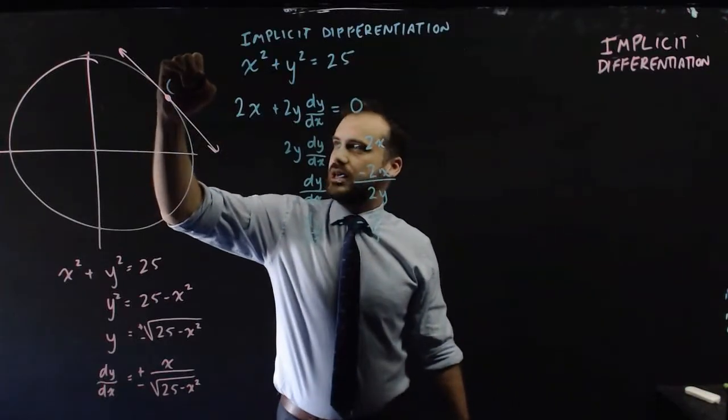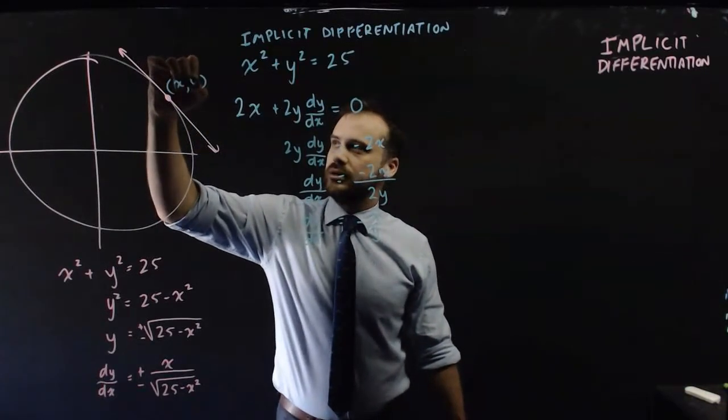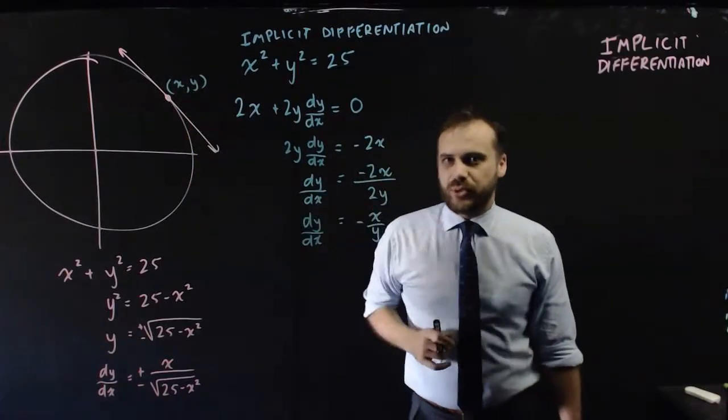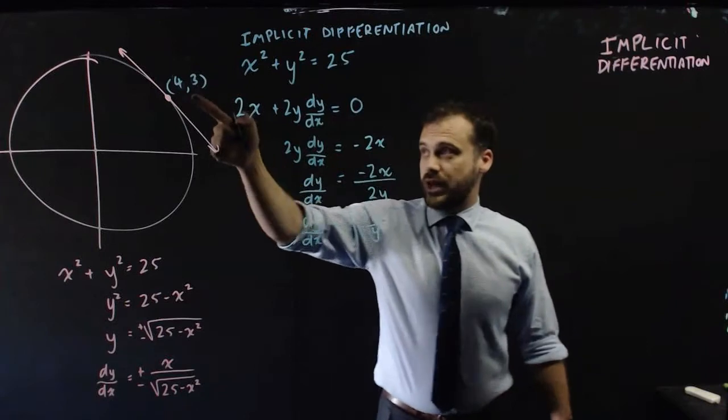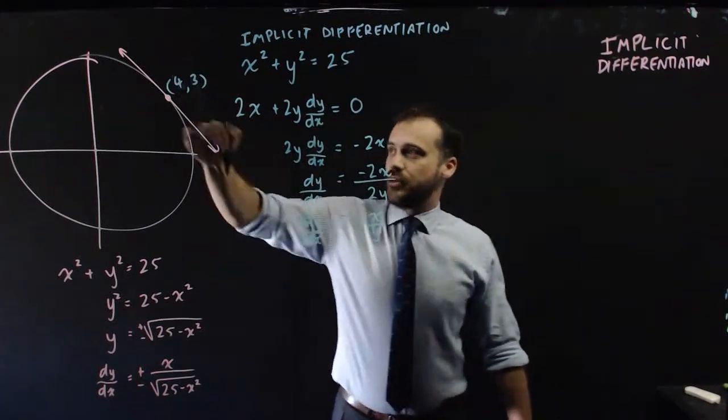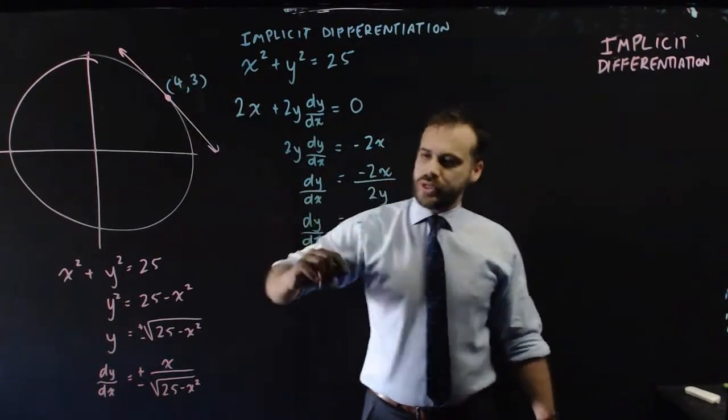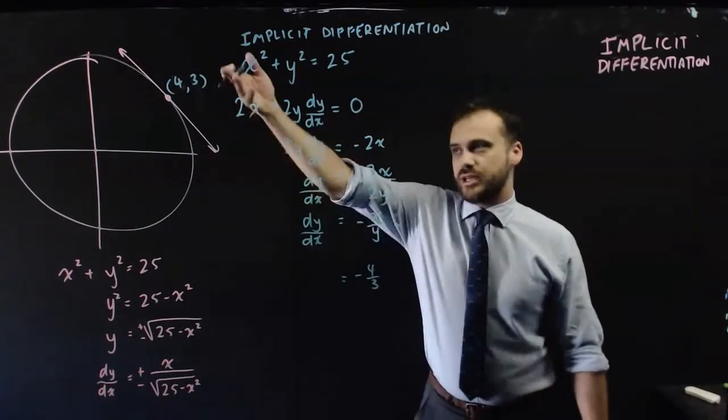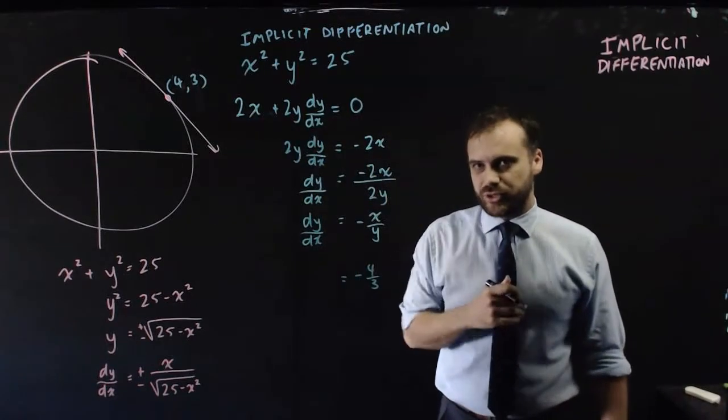If we subbed in this x and y point here, whatever it might be, we'll be able to find out the gradient at that point. So for example, if that was (4,3), the gradient at that point would be negative 4 over 3, negative 1.333 recurring.